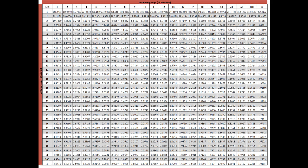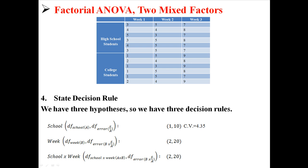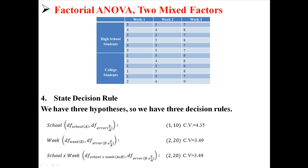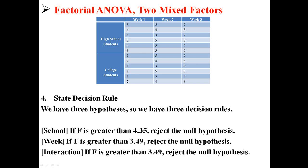We go to our F-table, where we have between on the top and within on the side. First, we look up 1 and 10 and find a critical value of 4.35. So for school, our critical value is 4.35. For week, we look up 2 and 20 and get a critical value of 3.49, which is also the critical value for the interaction of school and week. Our three decision rules are: for school, if F is greater than 4.35, we reject the null; for week and the interaction, if those Fs are greater than 3.49, we also reject the null.